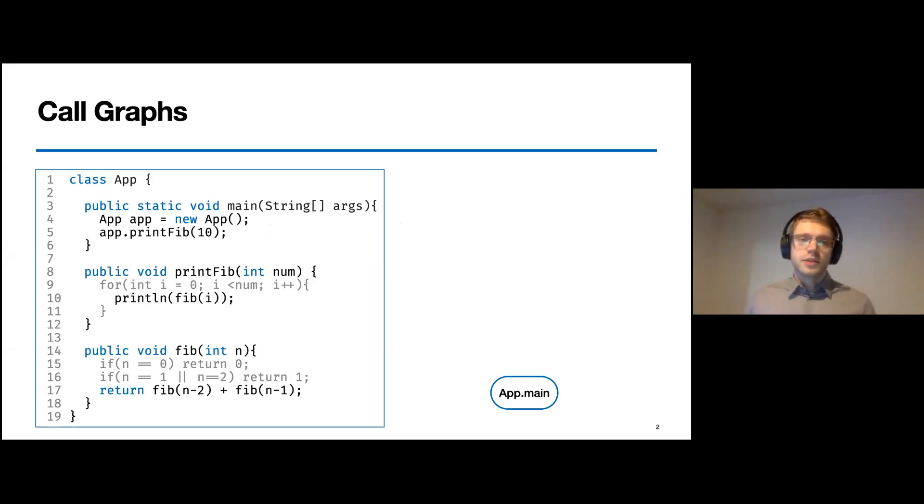Let's take a look at the program on the left-hand side. Here we see a Java program that computes and prints the 10th Fibonacci number. Now how do we construct its call graph? With its main method in line three, the program has a well-defined entry point where we can start to construct a call graph.